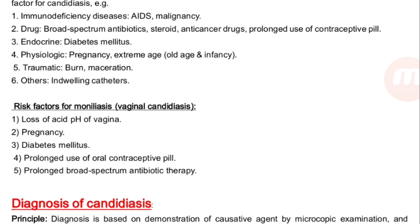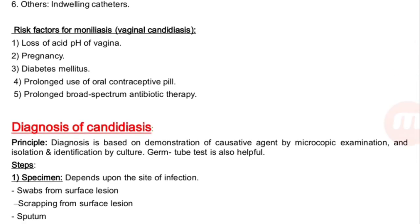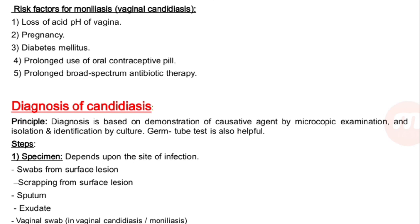Predisposing factors of candidiasis: any condition causing immunosuppression — immunodeficiency diseases like AIDS; malignancy; drugs like broad spectrum antibiotics, steroids, anticancer drugs; prolonged use of contraceptive pills. Broad spectrum antibiotics clear the normal flora, allowing opportunistic infection. Endocrine: diabetes mellitus. Physiologic: pregnancy, extreme age — old age and infancy. Traumatic: burns, maceration, indwelling catheters. Risk factors for moniliasis include loss of acid pH of the vagina.